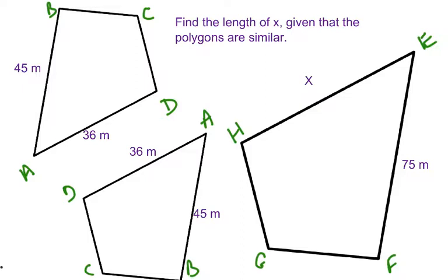Looking at both of these, we can now identify the corresponding sides. We have AB and EF correspond, as well as EH and AD.